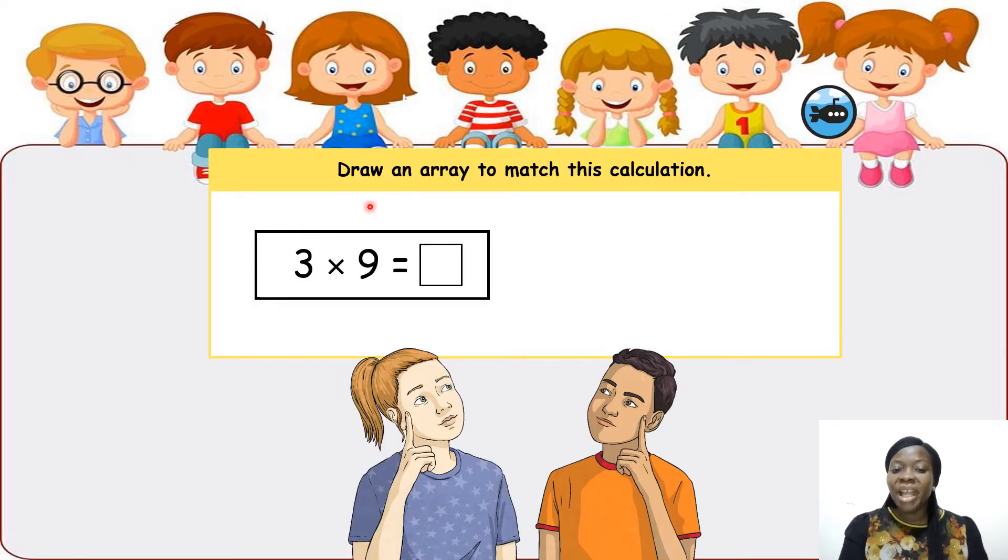Now over here, we've been asked to draw an array to match this calculation. If you watched my previous video on multiplication by 3, multiplication by 6, you should be used to using arrays to make your multiplication by now. So pause this video and have a go, 3 times 9. How can we represent it using an array? Pause the video and have a go.